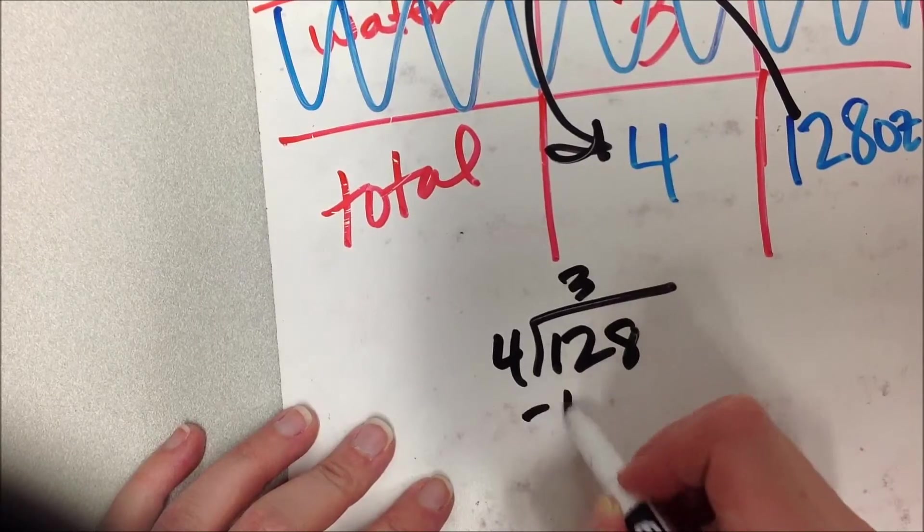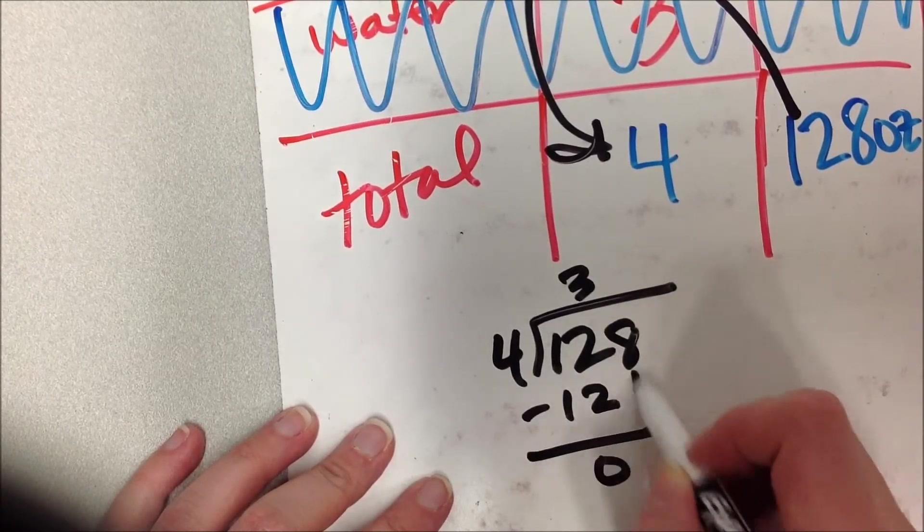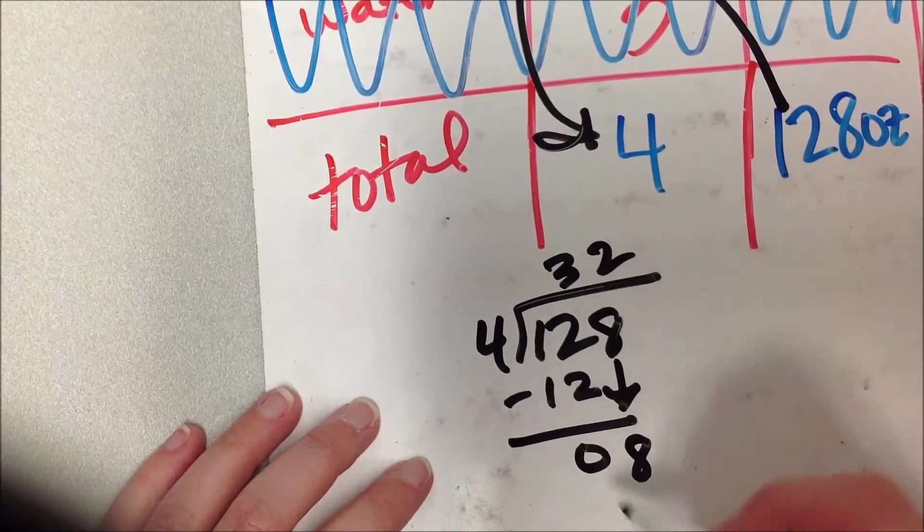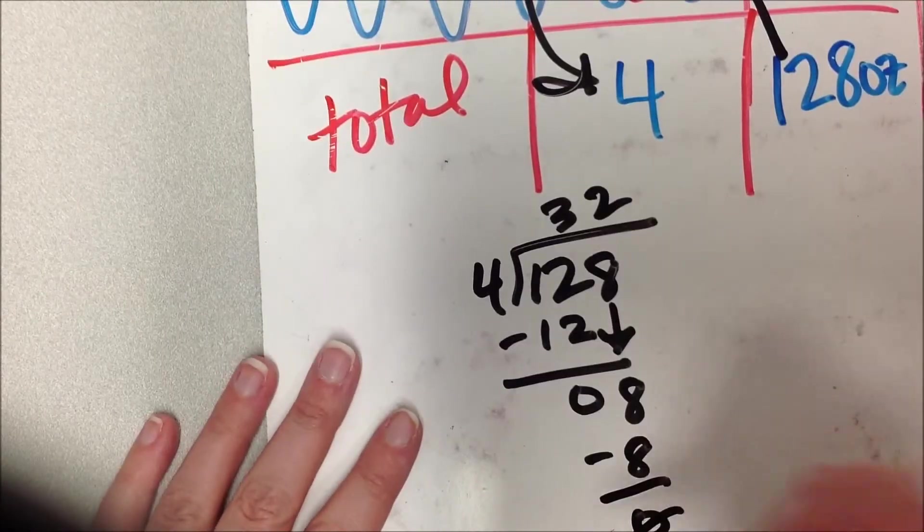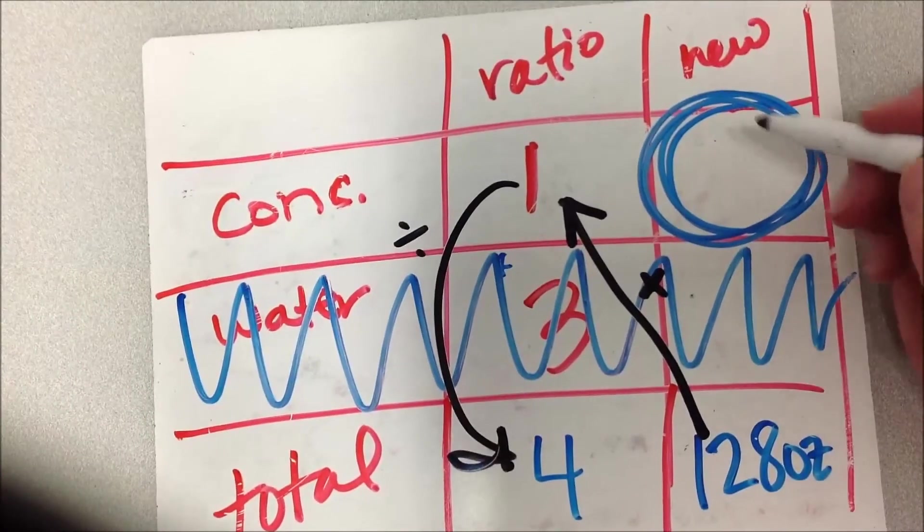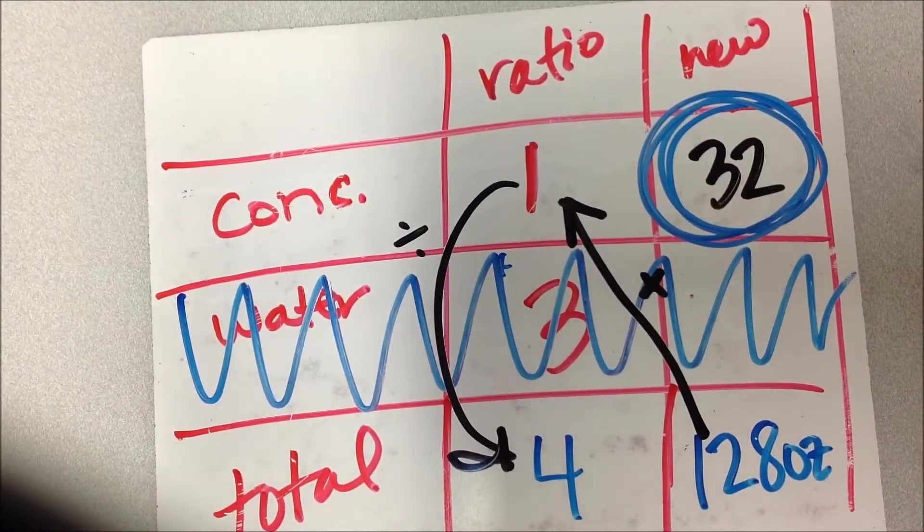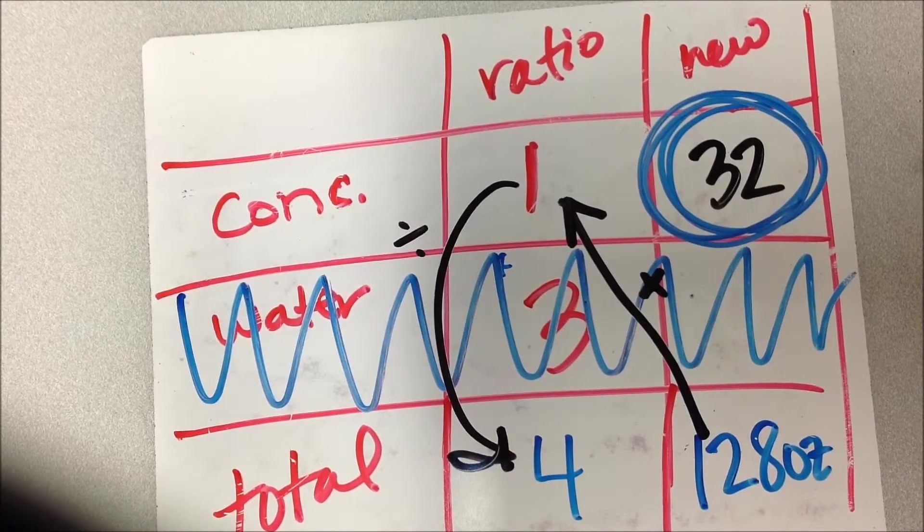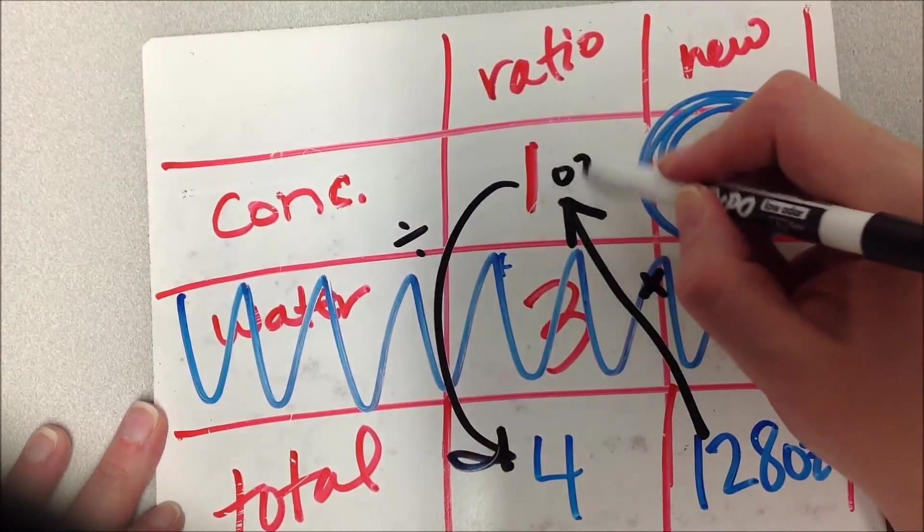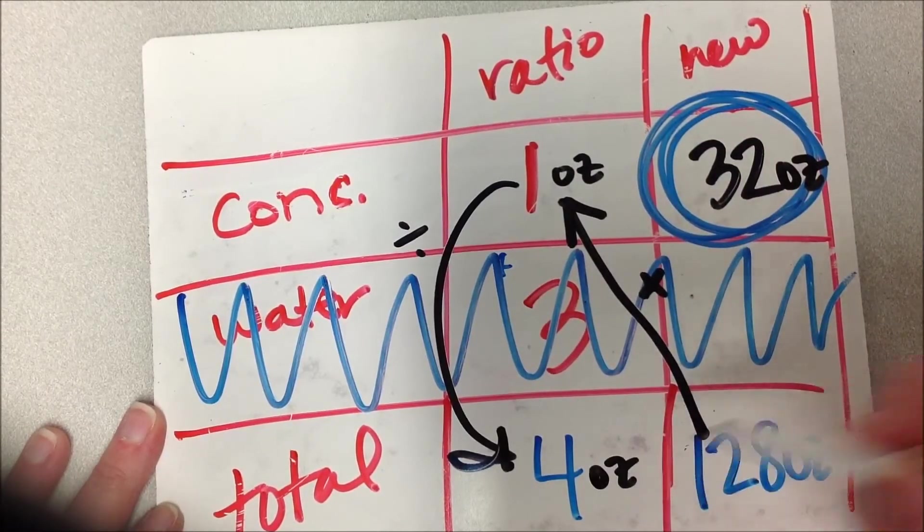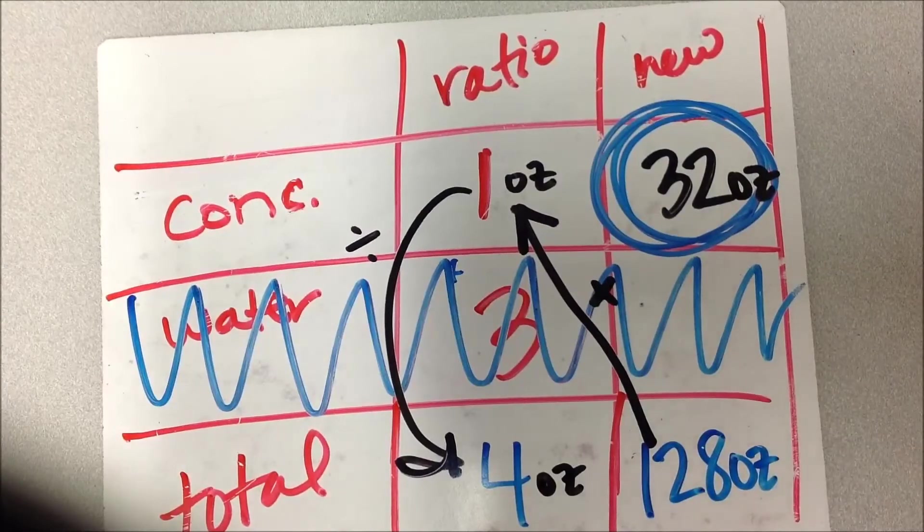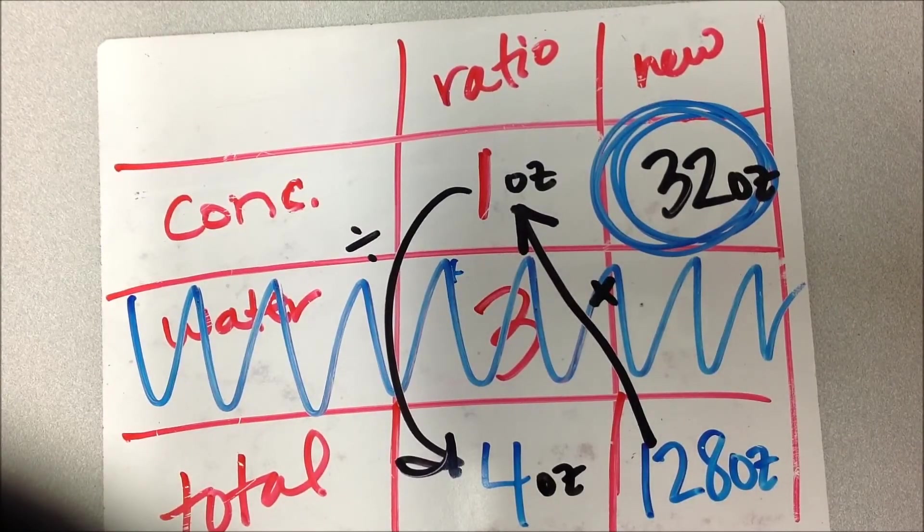It's going to go 3 times into 12. Zero. Drop the 8 down. 4 into 8 goes twice, which is 8, and I'm going to have 0 left over. So that means I'm going to need 32 ounces to make 128 ounces of concentrate.